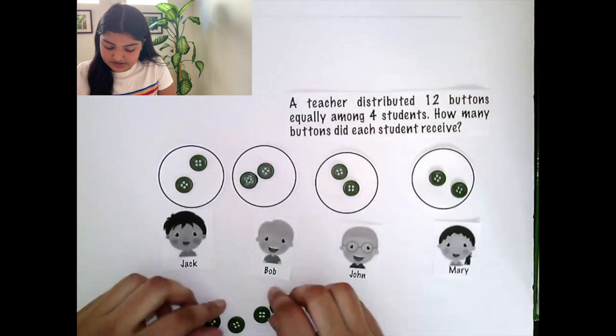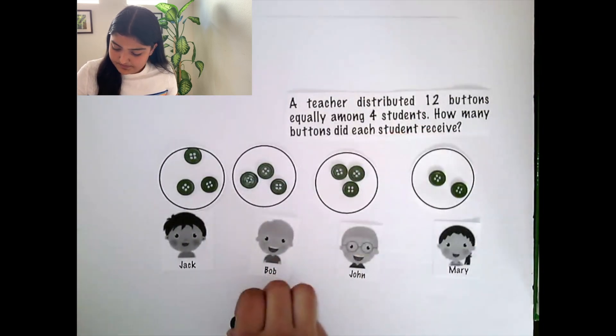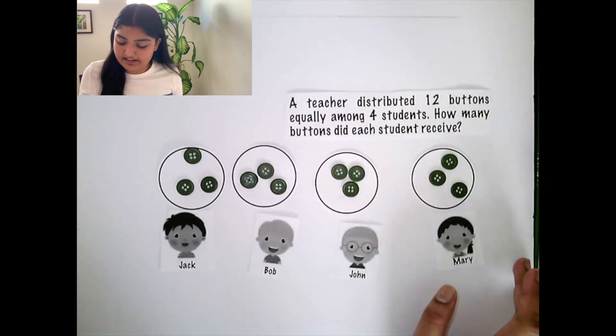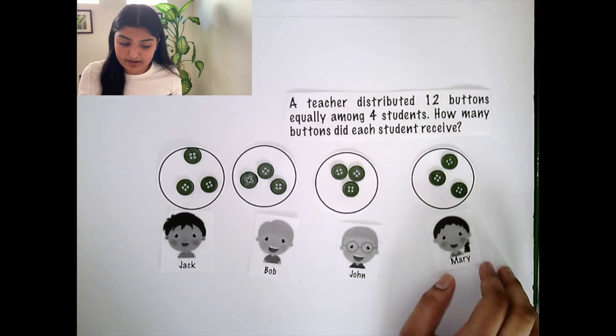Now each student has 2 buttons. As you can see, the teacher has equally distributed 12 buttons among her class. Jack, Bob, John, and Mary have each received 3 buttons.